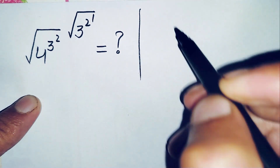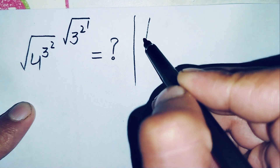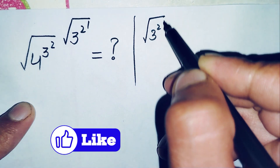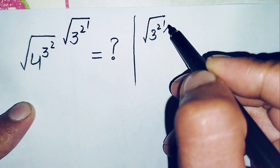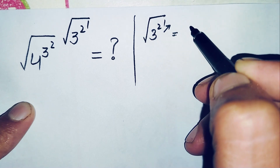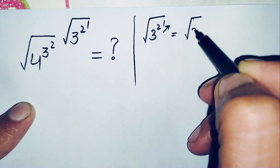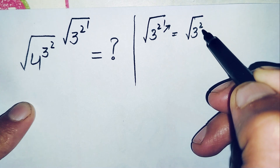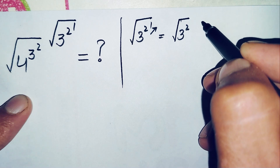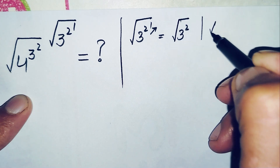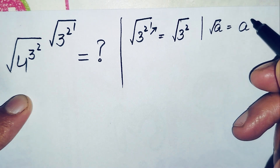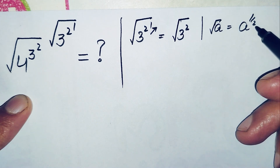Let's learn how we can solve this power. Our power is the square root of 3 raised to power 2, whole raised to power 1. Here first we find the value of 2 raised to power 1, which is simply 2, so this will become the square root of 3 raised to power 2. Now here we will use a result.